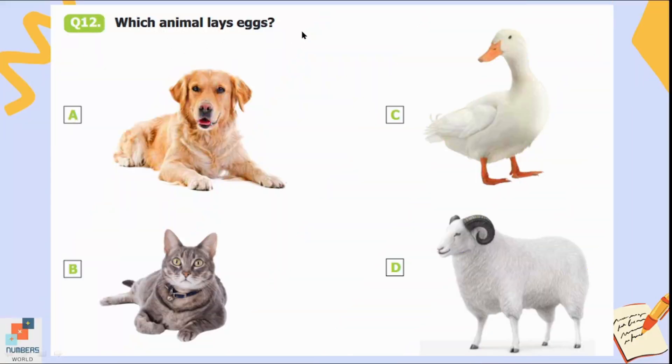Question number twelve: Which animal lays eggs? A dog, a cat, a duck, or a sheep. Dog, cat, and sheep are mammals which give birth to children. Birds lay eggs, so the duck is a bird which lays eggs. Option C is the correct answer.